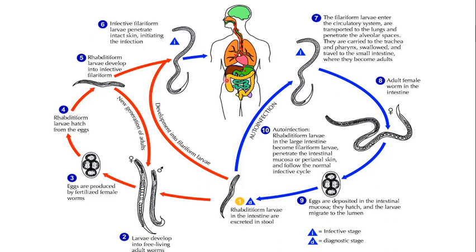The larvae are eventually coughed up and re-ingested by the host into the bowel, very much similar to that of an Ascaris infection. These larvae will then mature in the small intestine and eventually lay their eggs in the intestinal wall. The eggs embryonate and hatch into rhabditiform larvae, and by the time they reach the rectum, they will already have matured into infective filariform larvae.